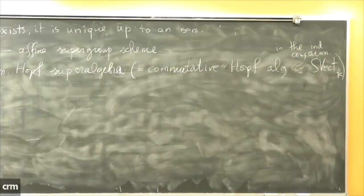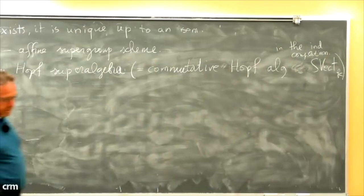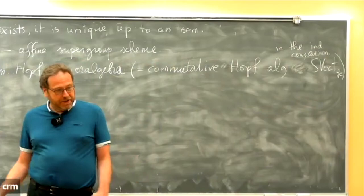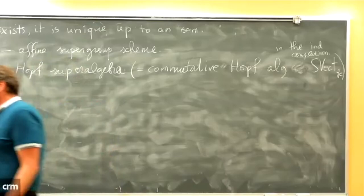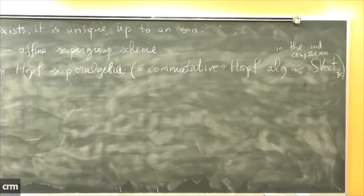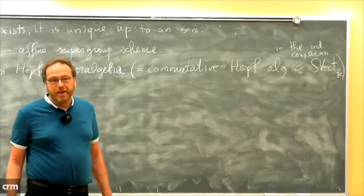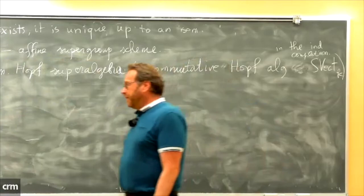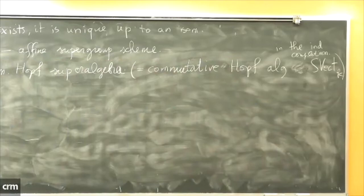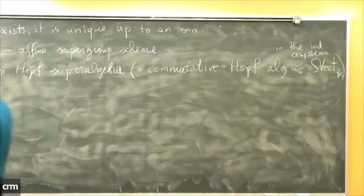Symmetric tensor categories are a framework where any linear algebraic structure makes sense, because linear algebraic structures are defined by maps between tensor powers of some object A. For example, an associative algebra has a map A⊗A → A; a Lie algebra also has A⊗A → A; a coalgebra has A → A⊗A. All such structures make sense in any symmetric tensor category. This is what it means to be an affine super group scheme.